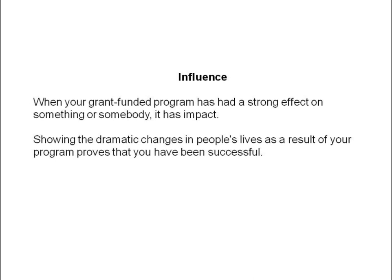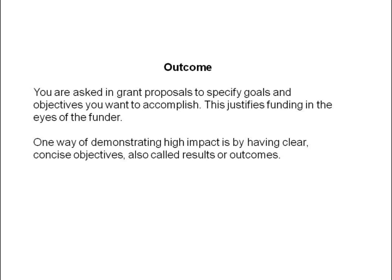You want to be able to show influence throughout your proposal — definitely in your organizational summary, if that is a part of the application. The second component of high-impact grant writing is outcomes. Normally in grant proposals, you are asked to specify goals and objectives that you want to accomplish, and doing this justifies funding in the eyes of the funder. One way of demonstrating high-impact is by having clear, concise objectives, which are also called results or outcomes.